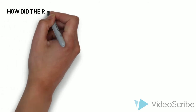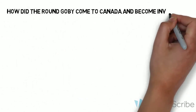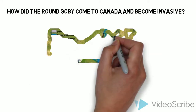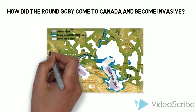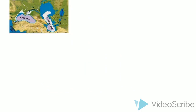How did the Round Gobi come to Canada and become invasive? This fish is native to the Black and Caspian Seas in Eastern Europe. It was first found in North America in 1990 in the St. Clair River, north of Windsor, Ontario. Researchers believe the fish was brought to North America in the ballast water of ships from Europe.